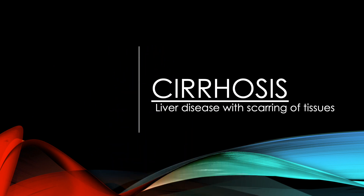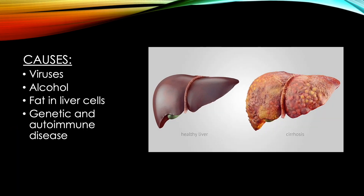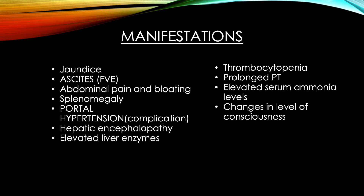Our last disorder is cirrhosis, a liver disease manifested as scarred tissue. An image depicts a healthy liver alongside a liver affected by cirrhosis. Causes include viral infection, excess alcohol consumption, a buildup of fat within the liver, genetic inheritance, or an autoimmune condition. Manifestations relate to interrupted liver function: we'll see jaundice, ascites, and edema due to fluid leaking out of vessels.